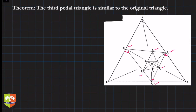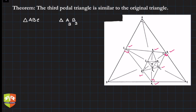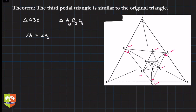We need to prove that triangles ABC and A3B3C3 are similar. The AAA criteria tells us that if corresponding angles are equal, two triangles are similar. So we need to prove that angle A = angle A3, angle B = angle B3, and angle C = angle C3. If we can prove this, we are done.